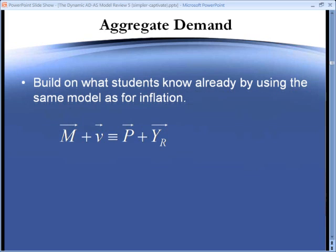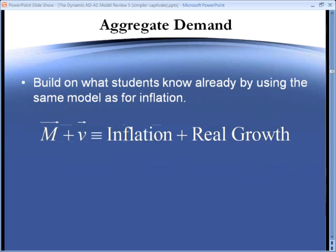We can write the quantity theory in growth or dynamic terms as the money growth rate plus velocity growth equals growth in prices plus growth in real GDP, where we've used an arrow to indicate growth rates. Rewriting this slightly, we have that M plus V is equal to inflation plus real growth.